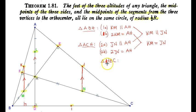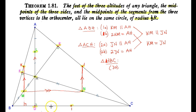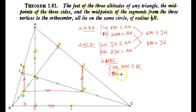Let's focus on triangle HBC. M is the midpoint of BH and N is the midpoint of HC, so line segment MN is simply parallel to BC — call it 3A. And because MN is the midline of triangle HBC, 2·MN = BC — call it 3B.